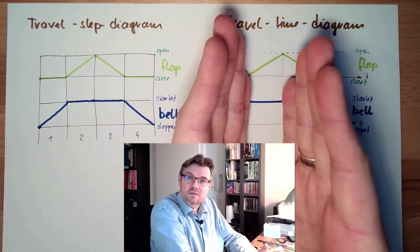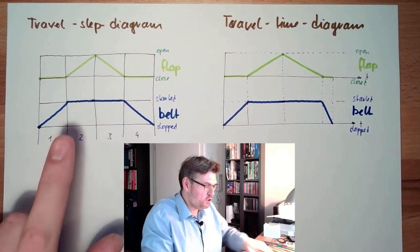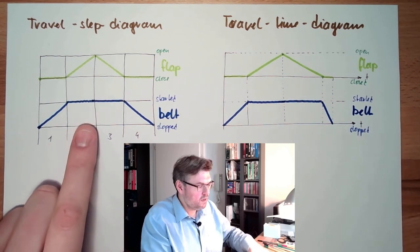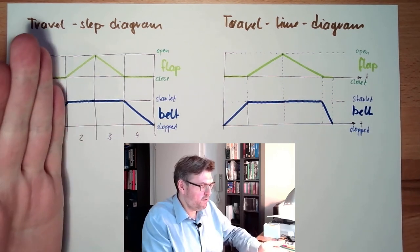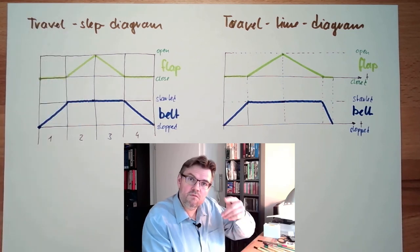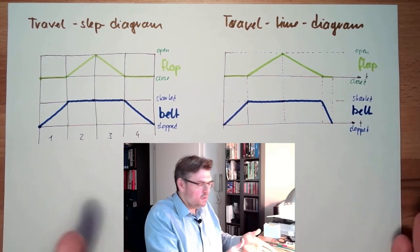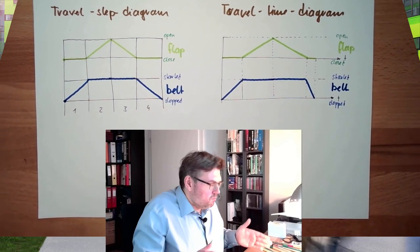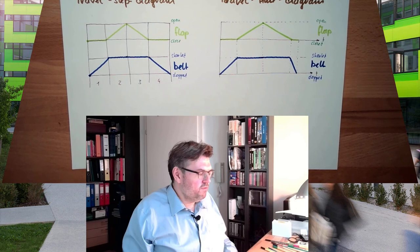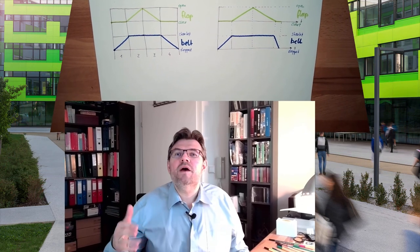However, you could also show delays, maybe here in a better fashion than here. Here we need additional information if we have a step of delay. Then we would need information how long it takes, this is here covered. So these are two possibilities of describing what our actuators should do.